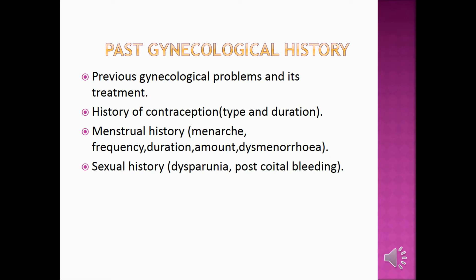Menstrual history: menarche, frequency, duration, amount, and dysmenorrhea. Sexual history: dyspareunia and post-coital bleeding.